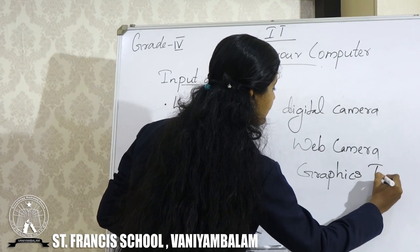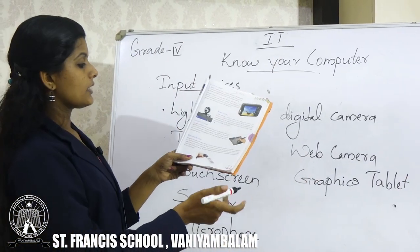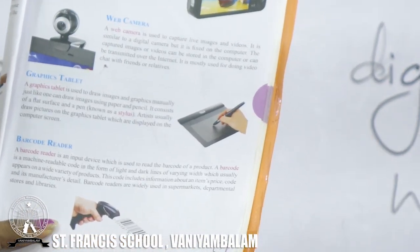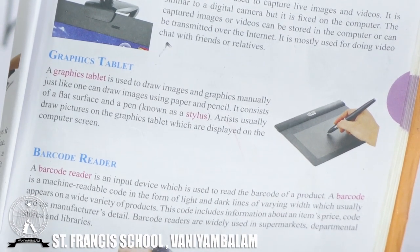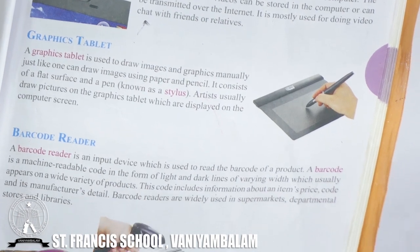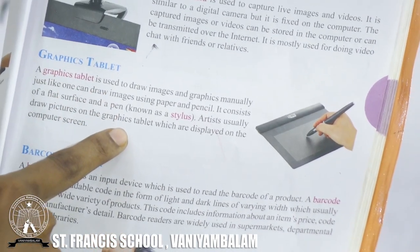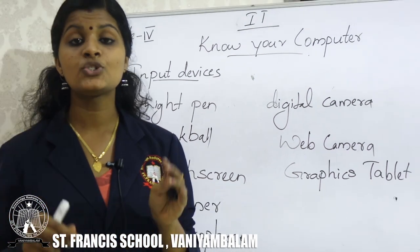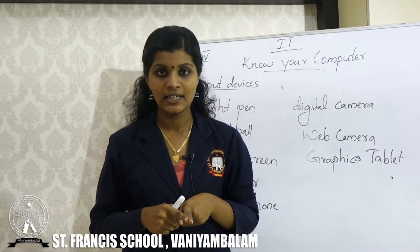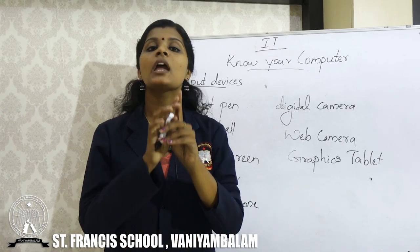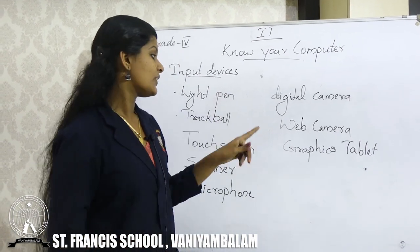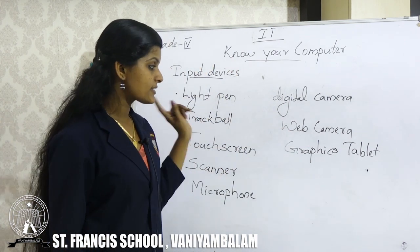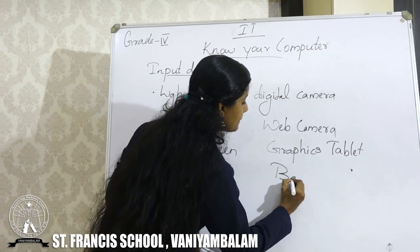The next input device is graphics tablet. You can see its picture in the textbook. Graphics tablet is used to draw images and graphics manually, just like one draws using paper and pencil. There is no need for a mouse — we can draw directly on the tablet just like we do on paper. Graphics tablet is another input device.